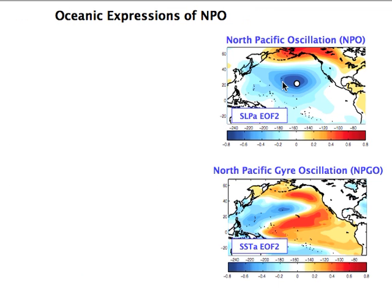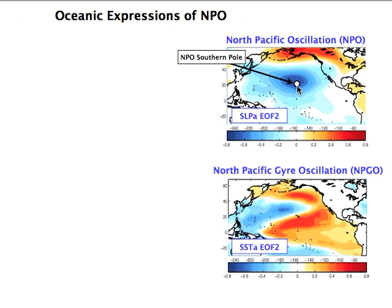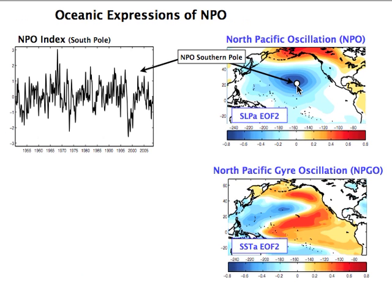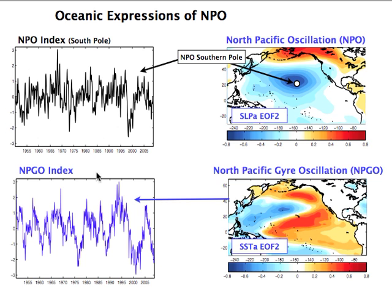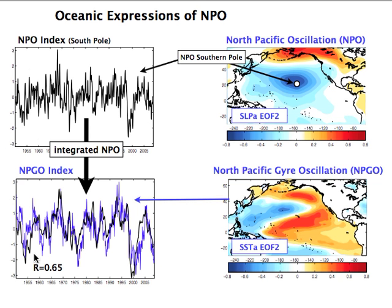In terms of the NPO and NPGO, the important component of atmospheric variability related to NPGO actually occurs over the southern pole of the NPO, over Hawaii. If we make a time series of that southern pole — this black curve — and integrate it and compare it to the NPGO index in blue, we find they share a strong correlation of 0.65, especially at low frequency. This seems to be the dynamical center of the NPGO dynamics.